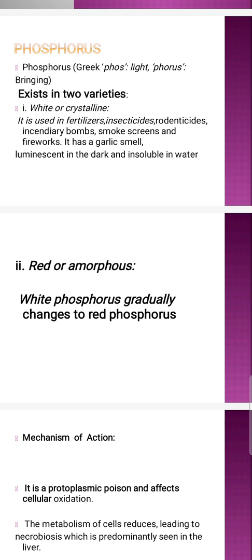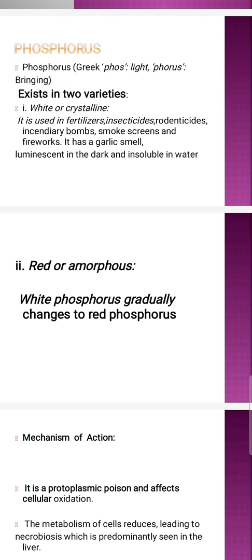Starting with our today's toxicology topic: the poison phosphorus. Phosphorus is basically derived from a Greek word containing two components — first is 'phos' meaning light, and second is 'phoros' meaning to bring. So phosphorus is something that brings light.